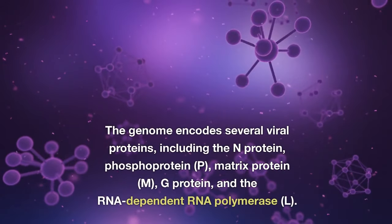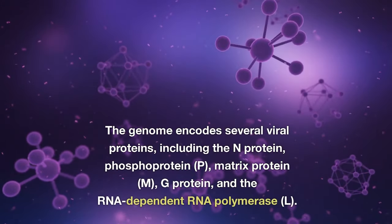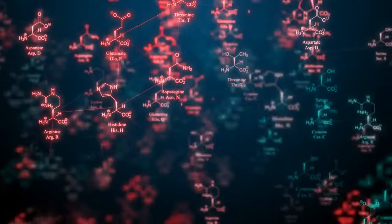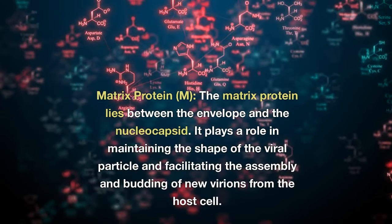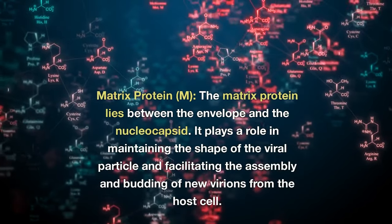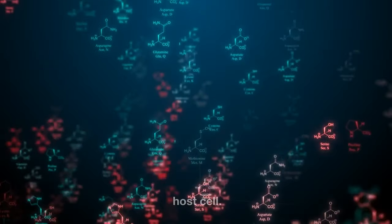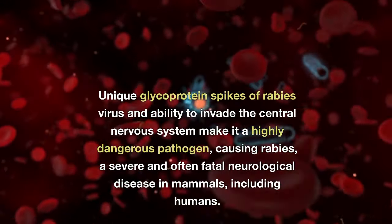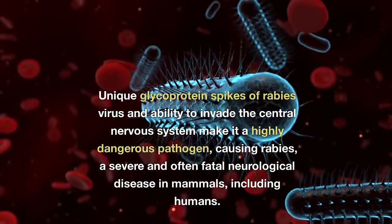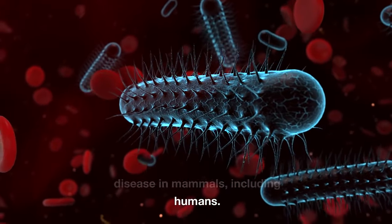The genome encodes several viral proteins, including the N-protein, phosphoprotein (P), matrix protein (M), G-protein, and the RNA-dependent RNA polymerase (L). The matrix protein lies between the envelope and the nucleocapsid, playing a role in maintaining the shape of the viral particle and facilitating the assembly and budding of new virions from the host cell. The unique glycoprotein spikes of the rabies virus and its ability to invade the central nervous system make it a highly dangerous pathogen, causing a severe and often fatal neurological disease in mammals, including humans.